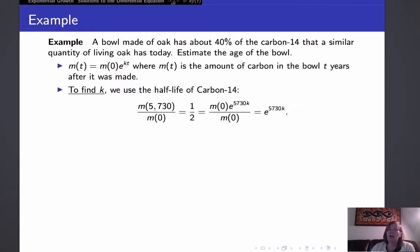So we have m, the mass of carbon, after 5,730 years, is one-half of the original amount, one-half of m of 0. So therefore m of 5,730 divided by m of 0 is one-half. And now replacing the mass after 5,730 years by its value in this equation above, we get m0 times e to the 5,730k divided by m0 is equal to one-half. But cancelling the m0s, we get that is equal to e to the 5,730k.